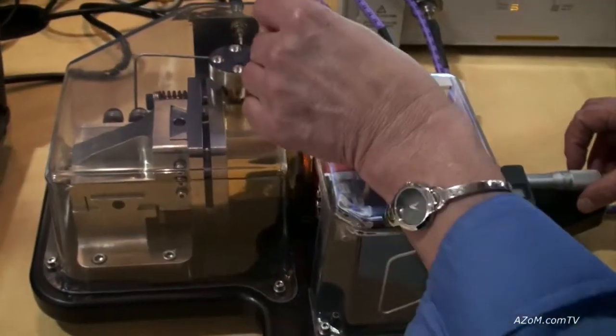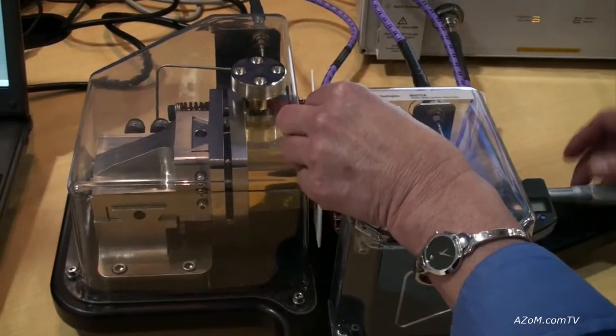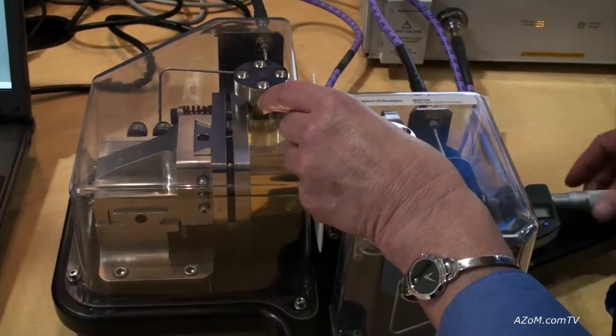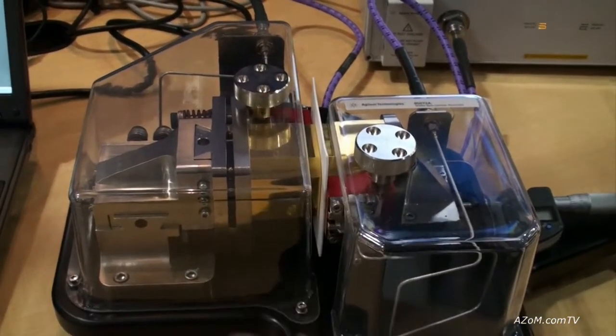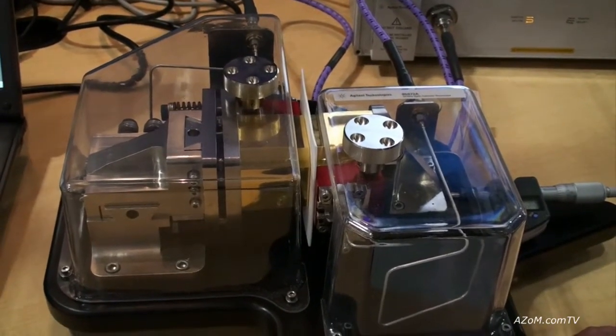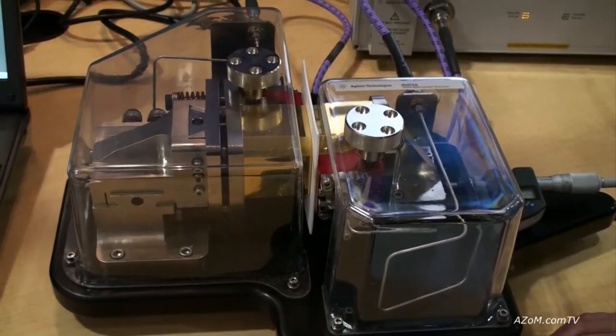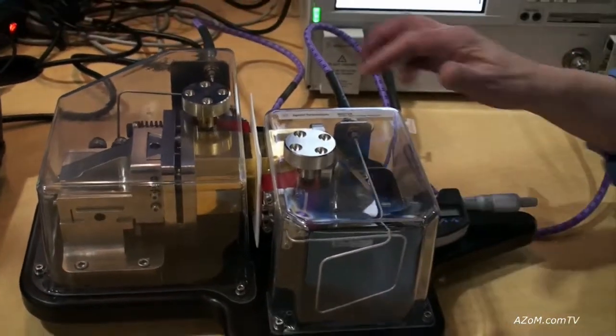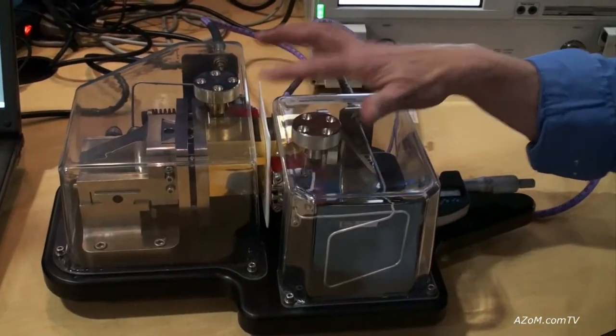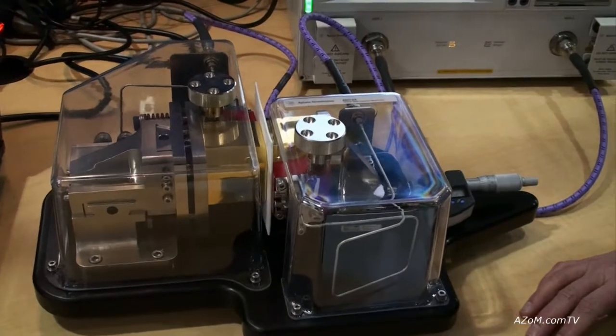The material is placed between the two cylinders and by measuring odd number TE0NP modes where the electric field is at its maximum, we can calculate permittivity.